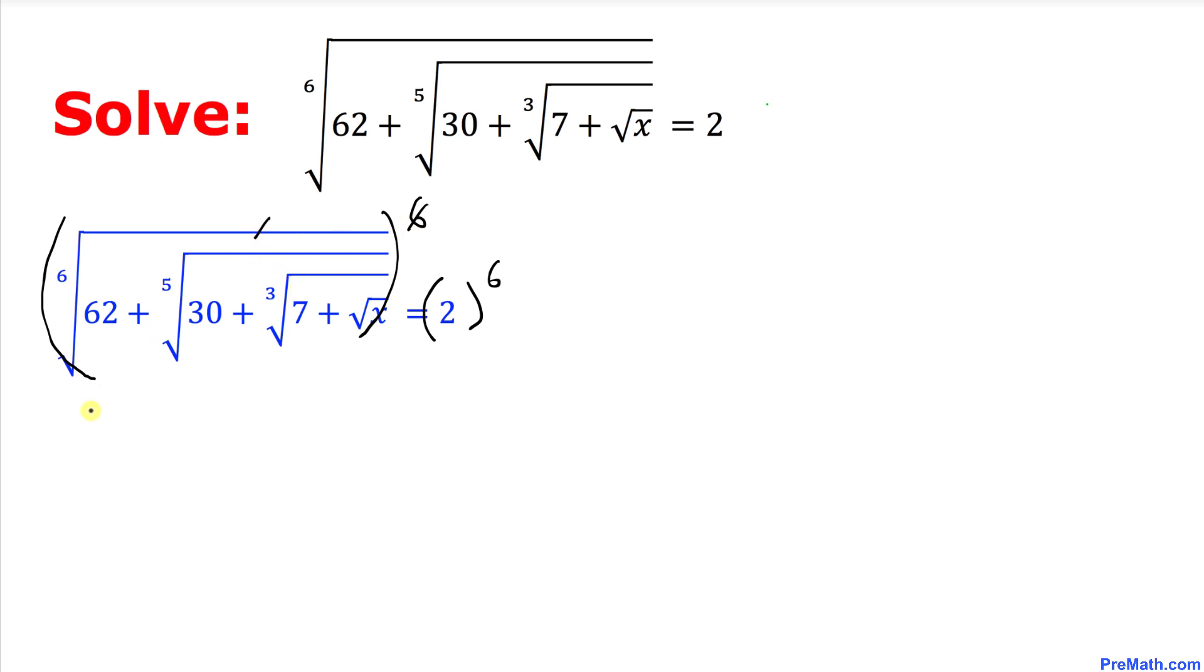So we ended up with 62 plus the fifth root of 30 and then inside that one we got the cube root of 7 and then followed by the square root of x, equal to 2 power 6 equal to 64.